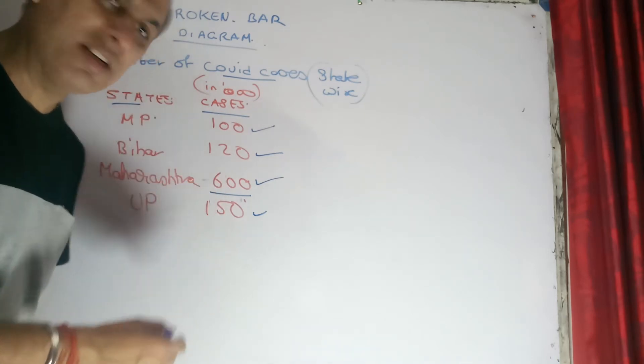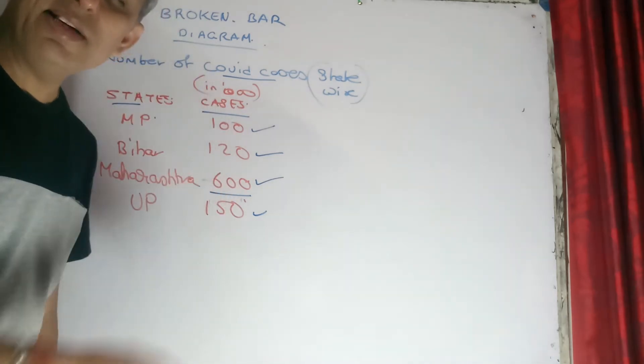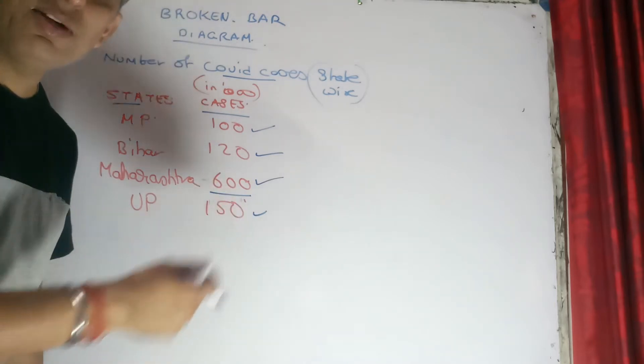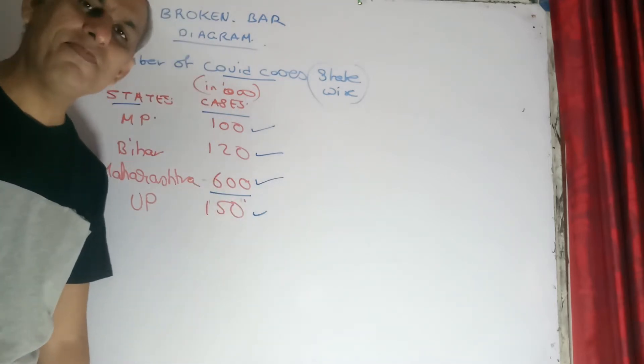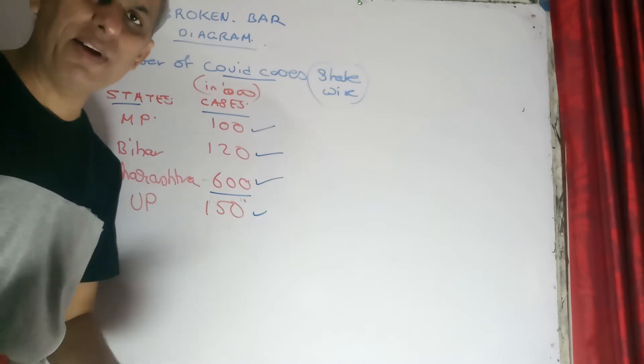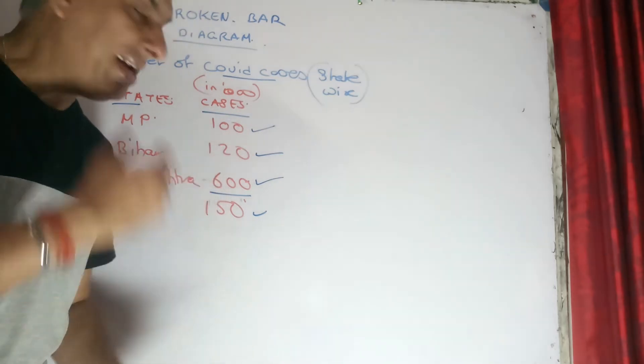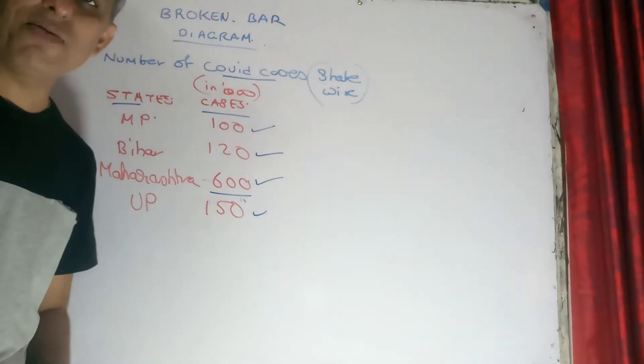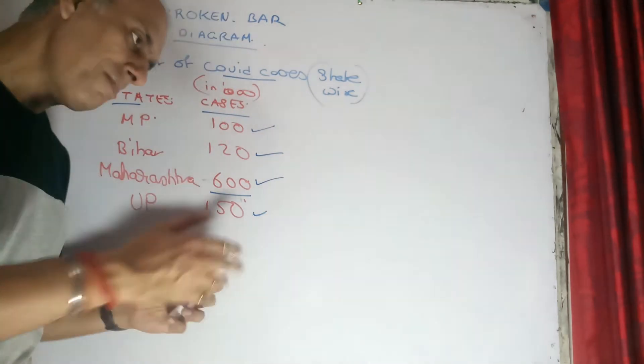But if you see the difference in it, Maharashtra is leaps and bounds ahead in comparison to the other three states, which speaks a little bit of a sorry state of that particular state, which is suffering from so many cases. The cases are expressed in thousands. So huge number of cases in comparison to other states.